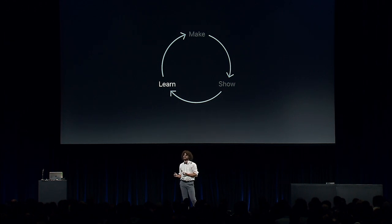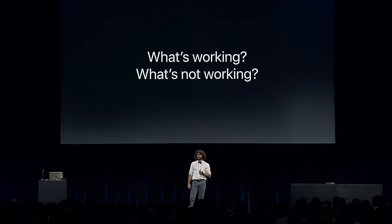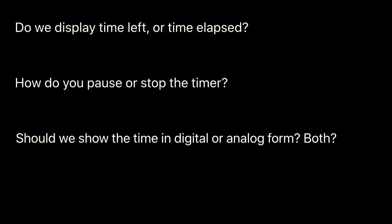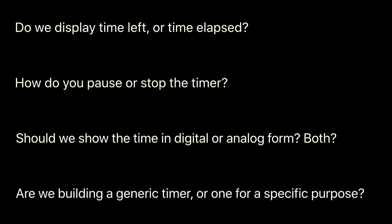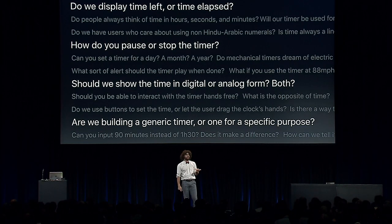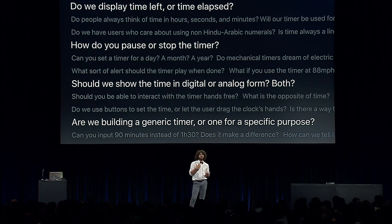Once we've shown our prototypes, we take a moment to step back and learn from the feedback we've gathered. What's working? What's not working? Do we refine what we have, or do we try something else altogether? Perhaps do some brainstorming to come up with the next steps. For example, here are some questions that came up: Do we display the time left or the time elapsed? How do you pause or stop the timer? Should we show the time in digital or analog form, or maybe both? And are we building a generic timer or one for a very specific purpose like solving Rubik's Cubes? The goal isn't to answer all of those questions, but rather to know what you don't know so you can strategically choose what to pursue next.